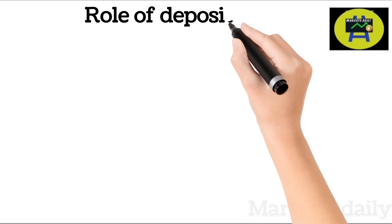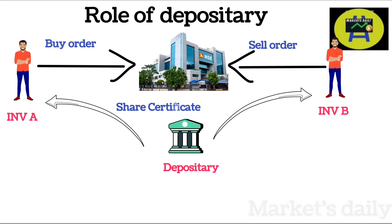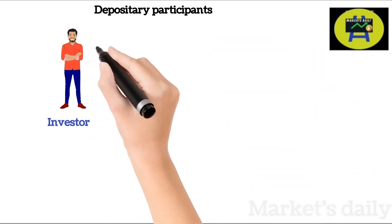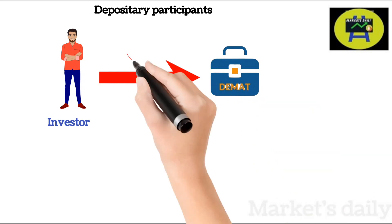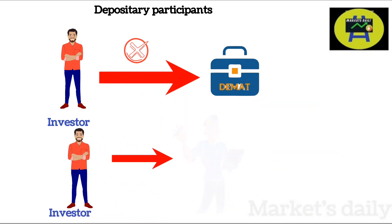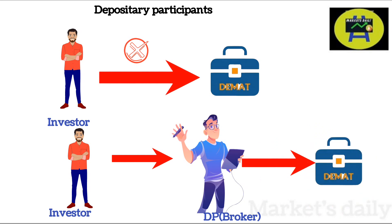If you buy a property, the only way to claim ownership is through property documents. Likewise, if you buy a share, the only way to claim ownership is through share certificates. Depositories provide share certificates in electronic form. You cannot directly go to NSDL or CDSL to open a DMAT account — only through depository participants can we open a DMAT account. For example, Zerodha.